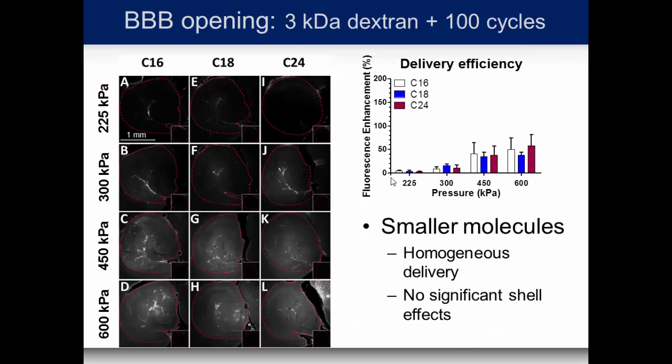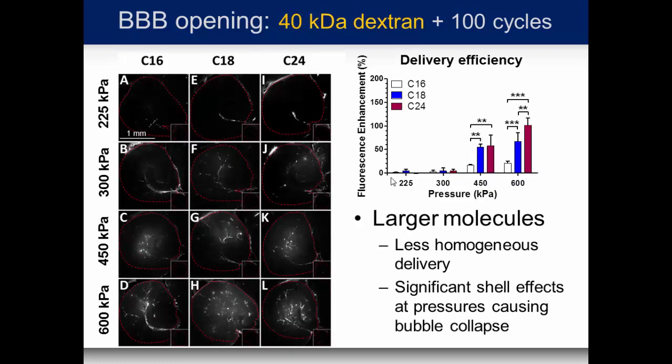The first case used the smaller 3 kilodalton dextran with only 100 cycles per sequence for opening the barrier, which is a very short pulse. Shown here are four panels going from 225 kilopascals, 300, 450, to 600 kilopascals, with the different shell acyl chain lengths C16, C18, and C24. In the beginning there's not much opening; where you see fluorescence is where the dextran diffused throughout the hippocampus. As pressure increases you get higher fluorescence, but there's not much change with shell chain length. For smaller molecules we conclude there is homogeneous delivery of the dextran but no significant shell effect.